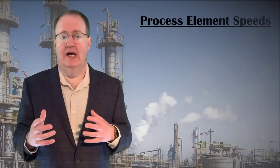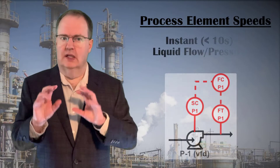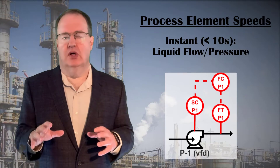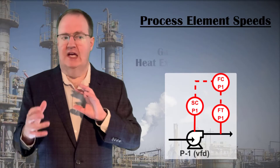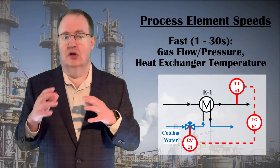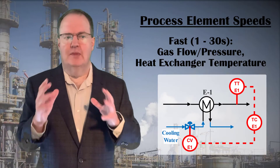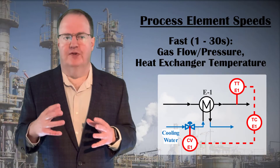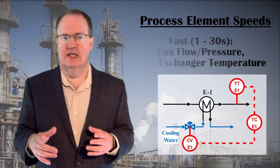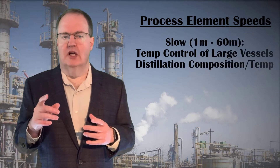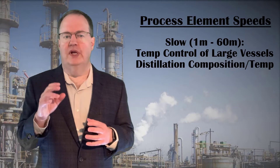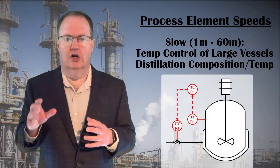What types of process elements make for fast and slow loops? Liquid flow and pressure change almost instantaneously, with a time constant of less than 10 seconds. Gas flow and pressure respond quickly, as does level in a tank, as long as the tank isn't enormous. The slow and sluggish processes that chemical engineers most often encounter are when we need to control composition or flow in a large vessel.